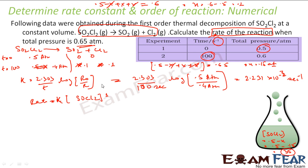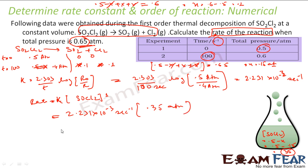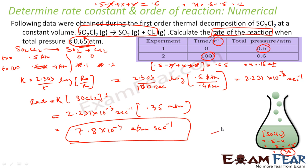That concentration of 0.35 atm is at the moment when total pressure is 0.65 atm — which is when we need to find the rate. Plugging in: rate = K × 0.35 = 2.231×10⁻³ × 0.35 = 7.8×10⁻⁴ atm per second. Please note: some questions ask for rate of reaction, some for rate constant — read the question carefully.